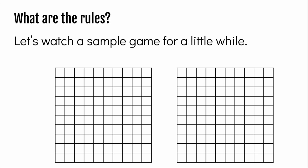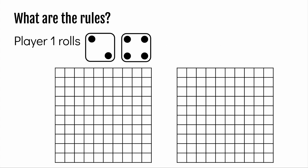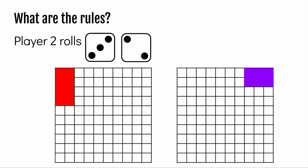Let's watch a sample game for a little while. Player 1 rolls 2 and 4 and shades this rectangle. Player 2 rolls and shades this rectangle.